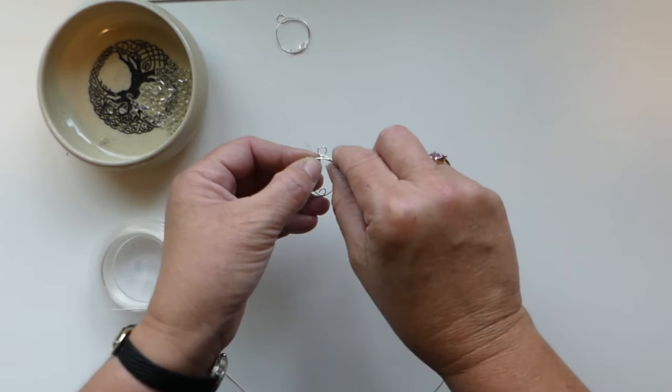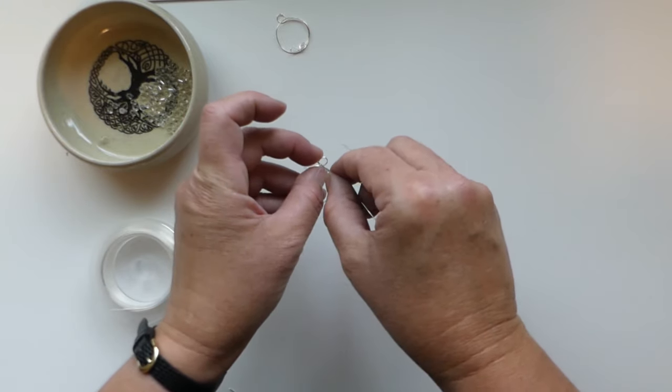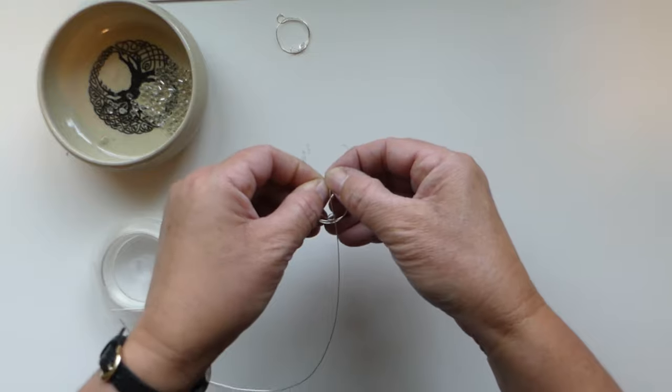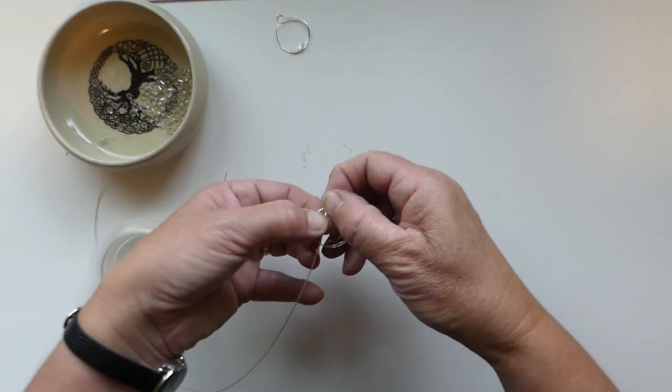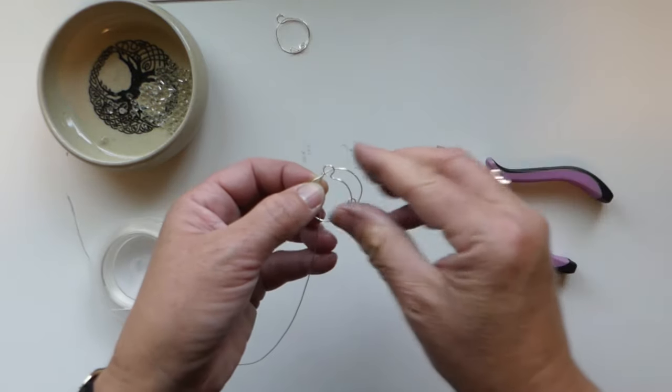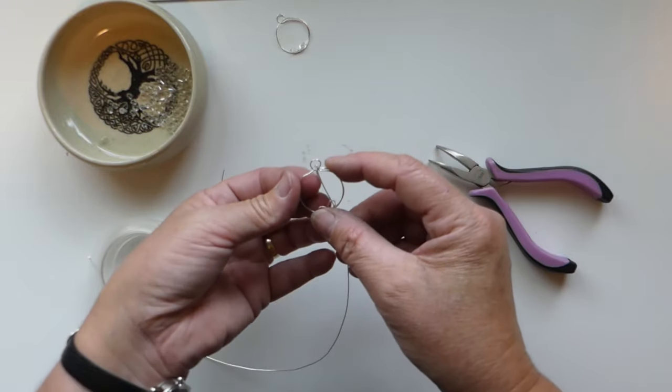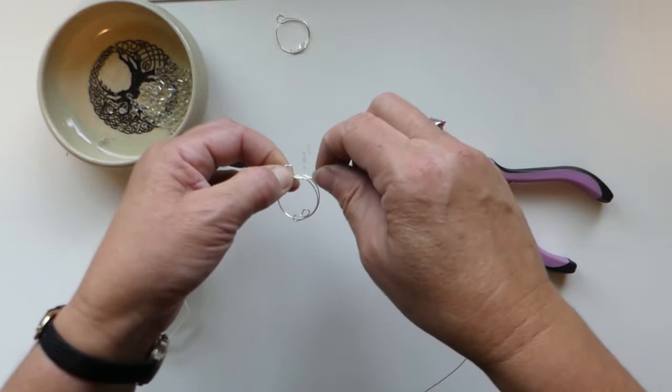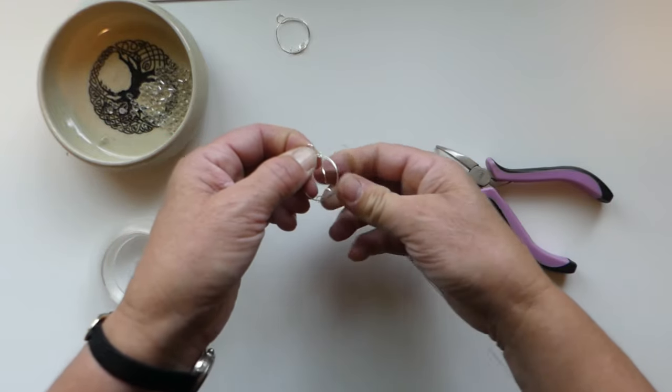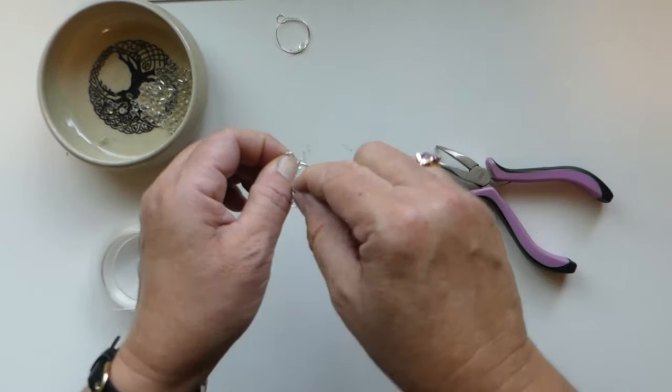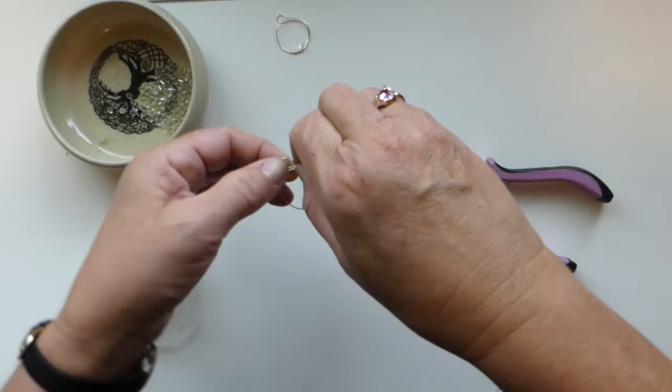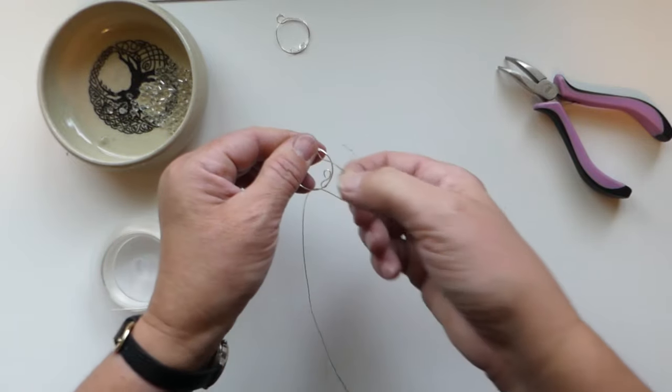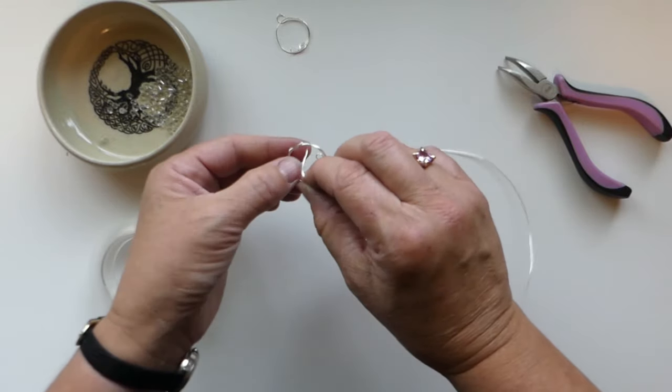So taking our wire, we just want to pop it through the center of our bail. Now this might not be closed all the way and that's okay, so we just want to give that a squeeze and flatten it there so that it's going to hold this in place. And then we are just going to start to wind our wire. You can take that little tail and you can lock it in there as well underneath that wire. These are just loose wraps.